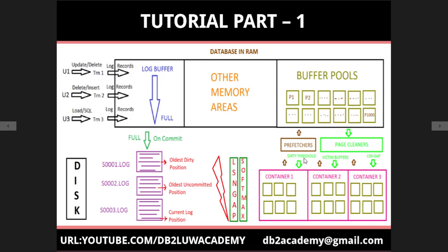Victim buffers and dirty threshold work hand-in-hand. But even together, they are not sufficient if the buffer pool is really large. With a very large buffer pool, neither the dirty threshold nor the victim buffer events will trigger, because those threshold events simply are not reached. You will accumulate more and more changes in the buffer pool without synchronizing to disk. To address that, a third trigger was introduced: the LSN gap trigger.